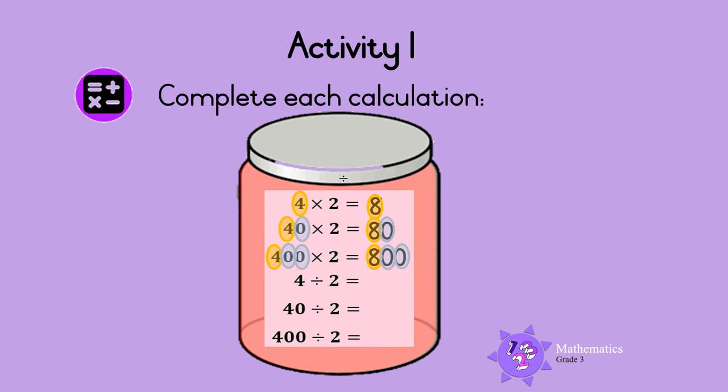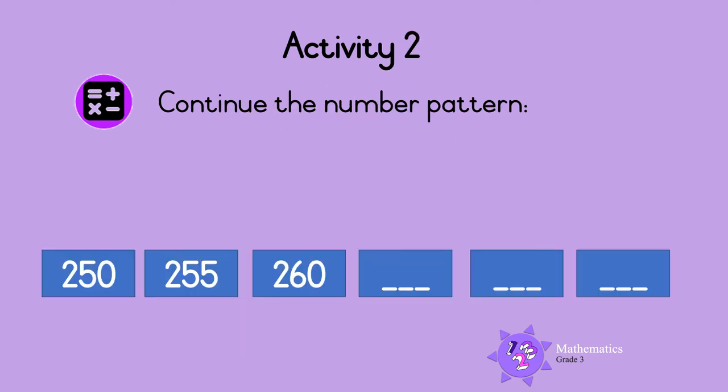800! That's it, let's keep going. 4 divided by 2 is 2, so then 40 divided by 2 is 20, and 400 divided by 2 is 200. Well done!